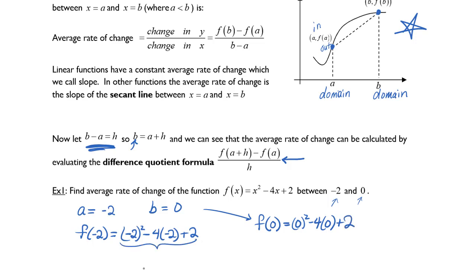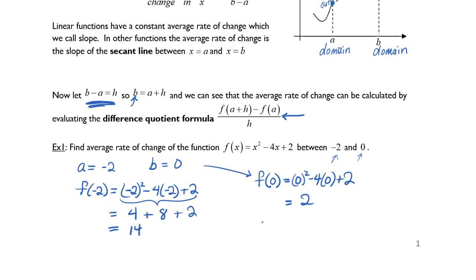If we simplify f of negative 2, we're going to have 4 plus 8 plus 2, which is equal to 14. For f of 0, we're going to get 0 plus 0 plus 2.